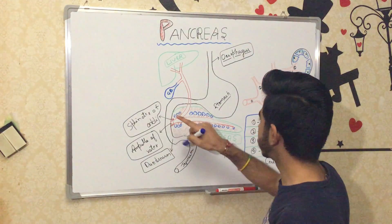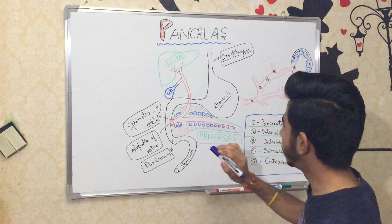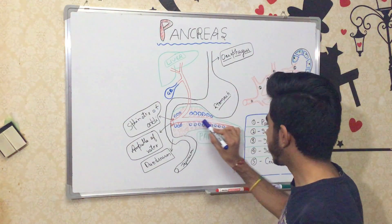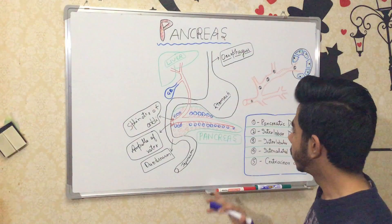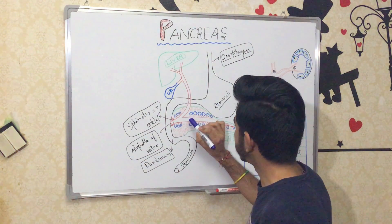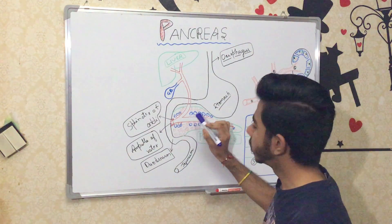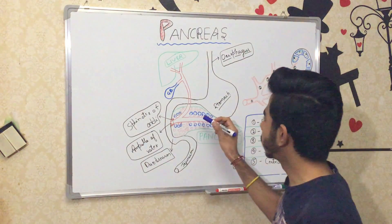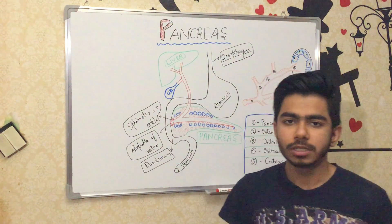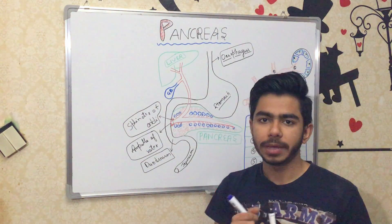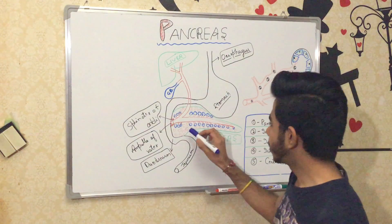Now talking about the pancreas in more detail — this is the pancreatic duct, which further divides into various kinds of ducts. These ducts will meet the acinar cells, and these acinar cells are responsible for producing the enzymes. In other words, acinar cells in the pancreas are responsible for performing exocrine functions.